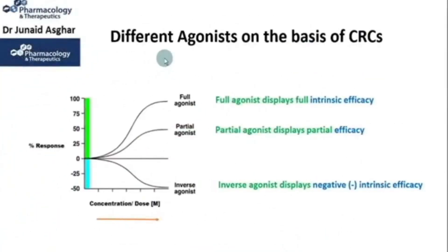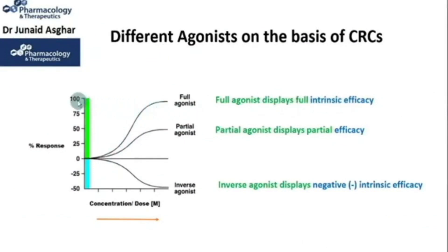Now let's see how different types of agonists appear in a typical concentration-response curve. A full agonist displays full intrinsic efficacy, a partial agonist displays partial efficacy, whereas an inverse agonist displays negative intrinsic efficacy.